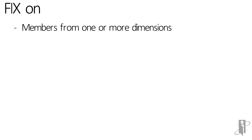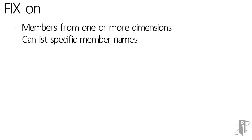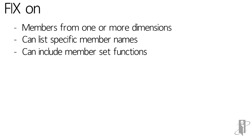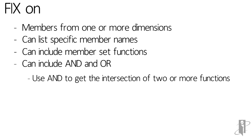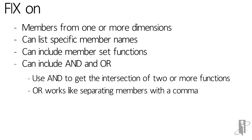Inside of your FIX statement you can fix on a specific member of a dimension or multiple members from that dimension. You can list a member name, you could list an alias, you could list member set functions like @ANCESTORS or @UDA. You can use AND and OR, but they might not work the way you think. If you have two functions — say @DESCENDANTS of West and @UDA for a certain UDA like Major Market — AND will give you the intersection of those two functions. If you say @DESCENDANTS of West OR @UDA, it's going to give you the union of those two: basically all things that meet the first condition or meet the second condition, roughly the same as separating the members with a comma.